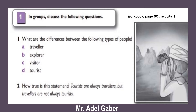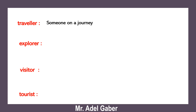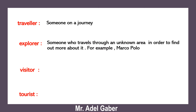In groups, discuss the following questions: What are the differences between the following types of people — a traveler, an explorer, and a visitor or tourist? How true is this statement: 'Tourists are always travelers, but travelers are not always tourists'? Now you have five minutes. Stop this video and do this task.